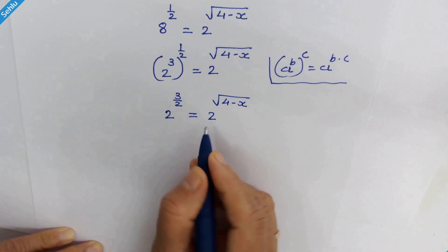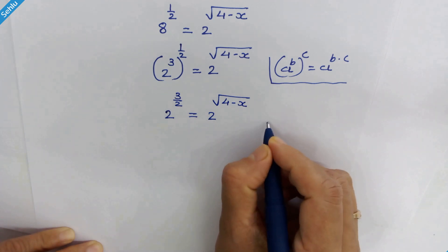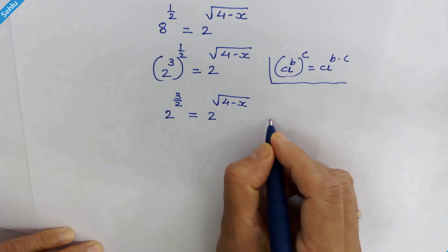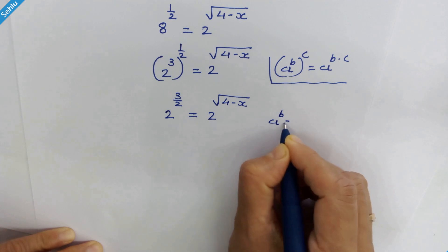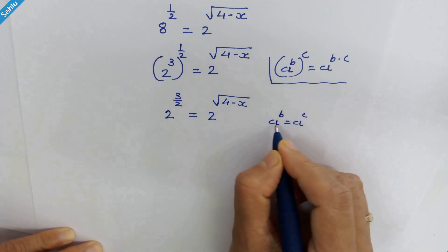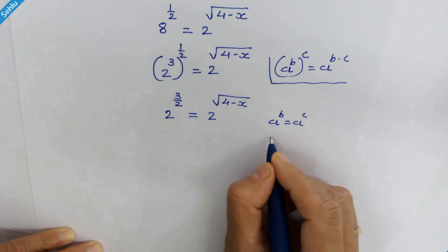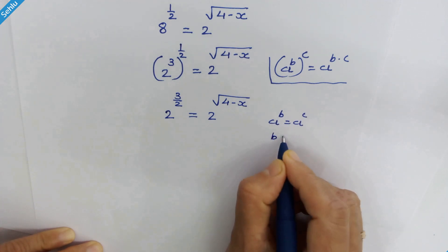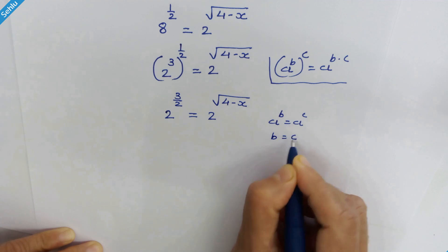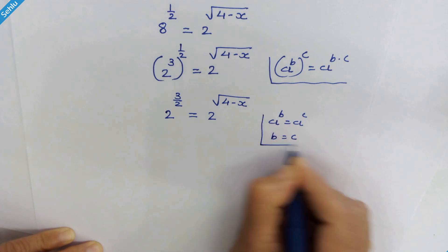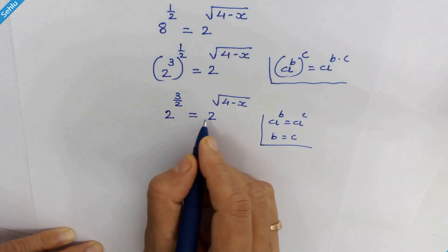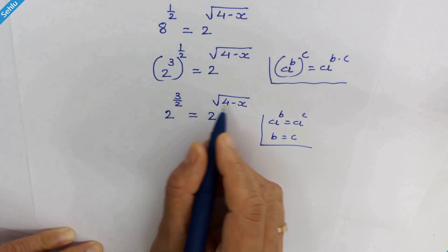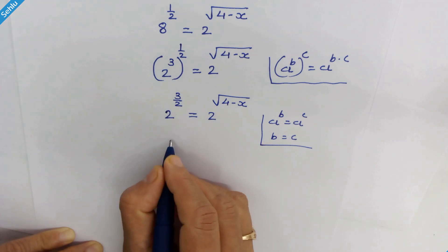We have the same base here. The rule says if we have a raised to b equal to a raised to c, then we can equate the exponents: b is equal to c. So here we have the same base on both sides, and we can equate their exponents.